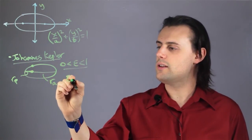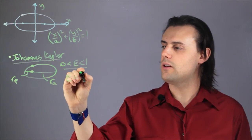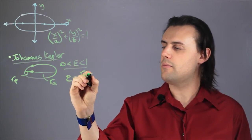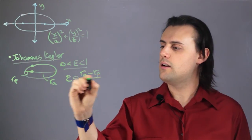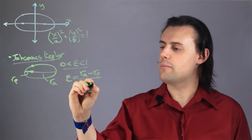The eccentricity can be written in terms of these distances as R sub A minus R sub P divided by R A plus R P.